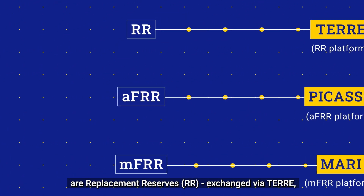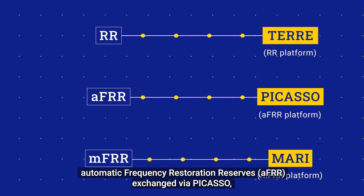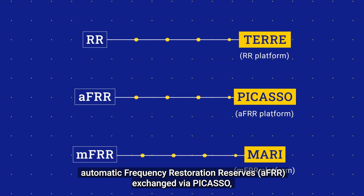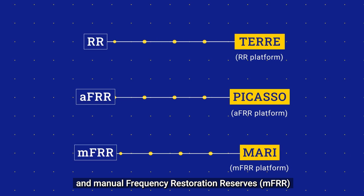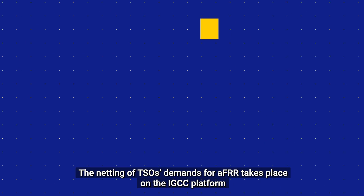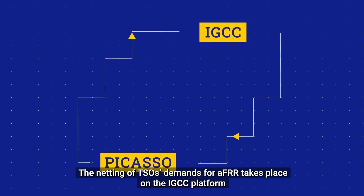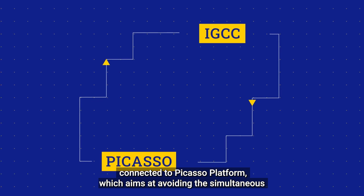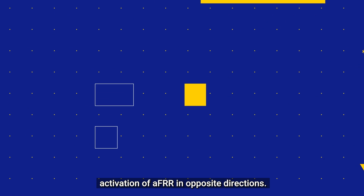The energy reserves exchanged via the balancing platforms are: Replacement Reserves (RR), exchanged via TERRE; Automatic Frequency Restoration Reserves (AFRR), exchanged via PICASO; and Manual Frequency Restoration Reserves (MFRR), exchanged via the MARI platform. The netting of TSOs' demands for AFRR takes place on the IGCC platform, connected to the PICASO platform, which aims at avoiding the simultaneous activation of AFRR in opposite directions.